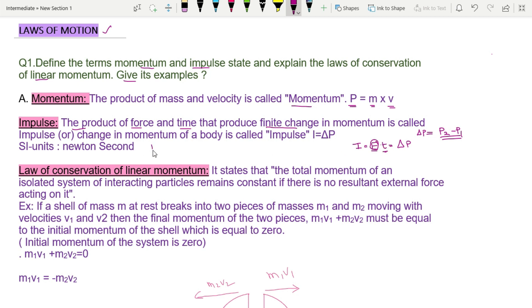The law of conservation of linear momentum states that the total momentum of an isolated system of interacting particles remains constant if there is no resultant external force acting on it.